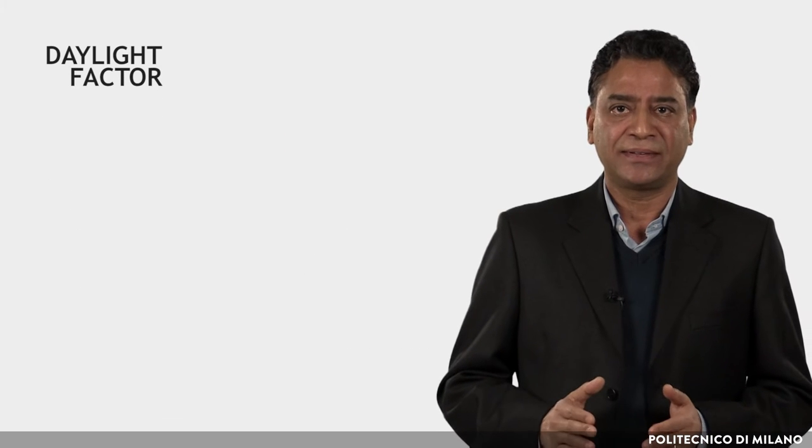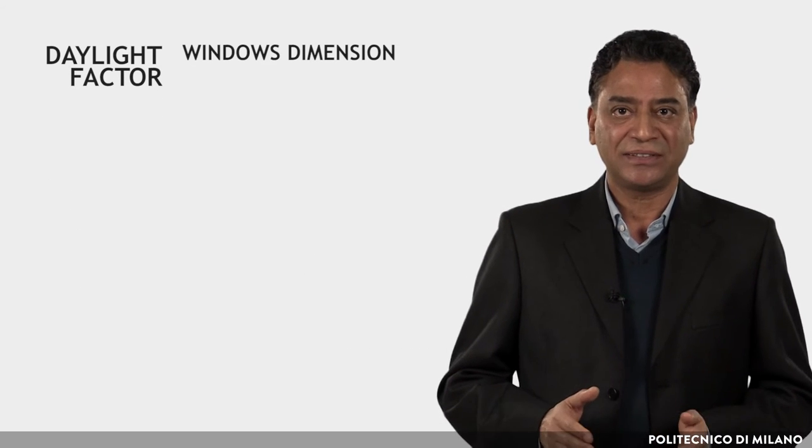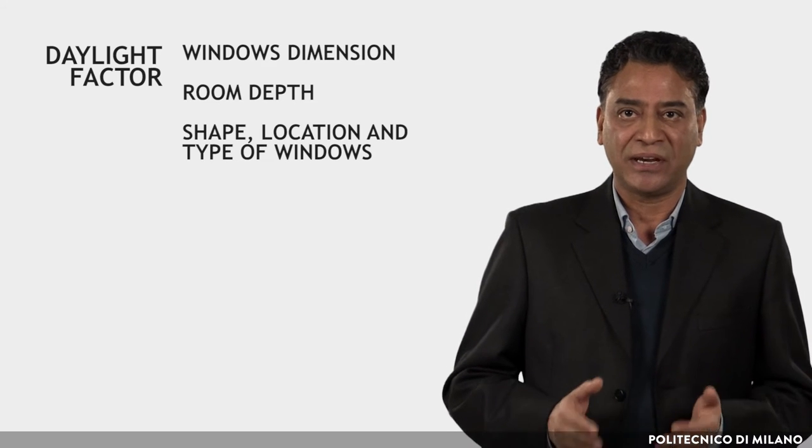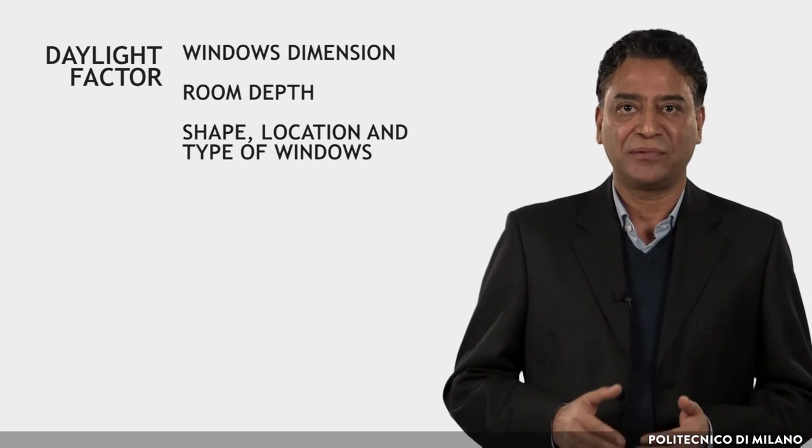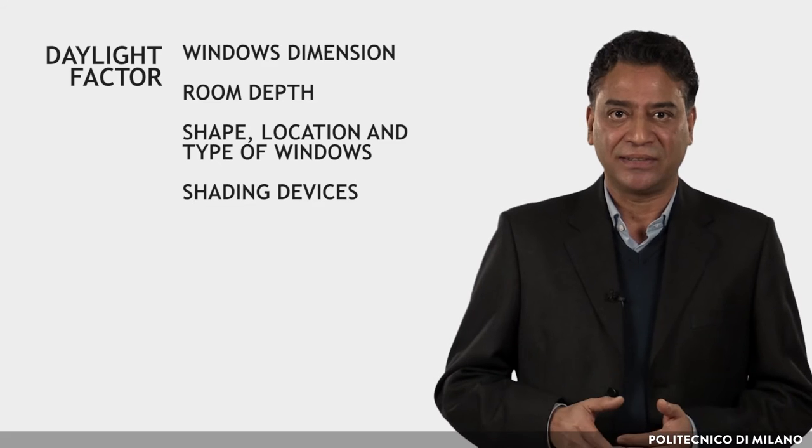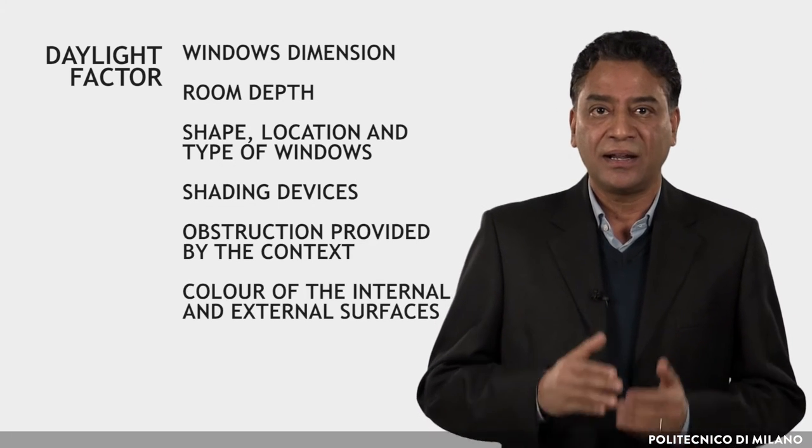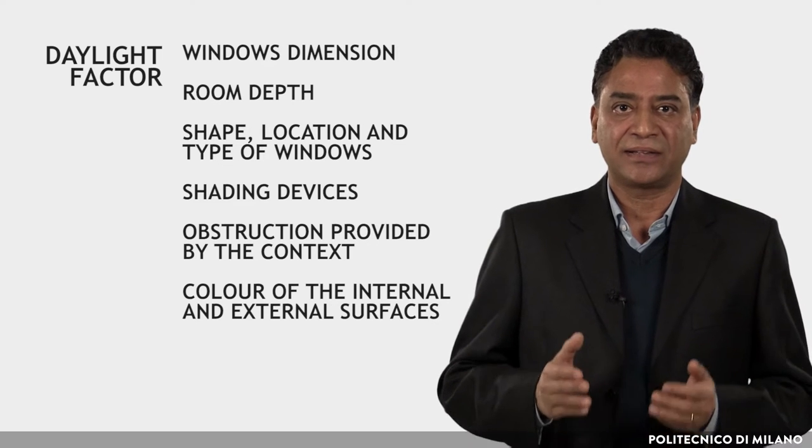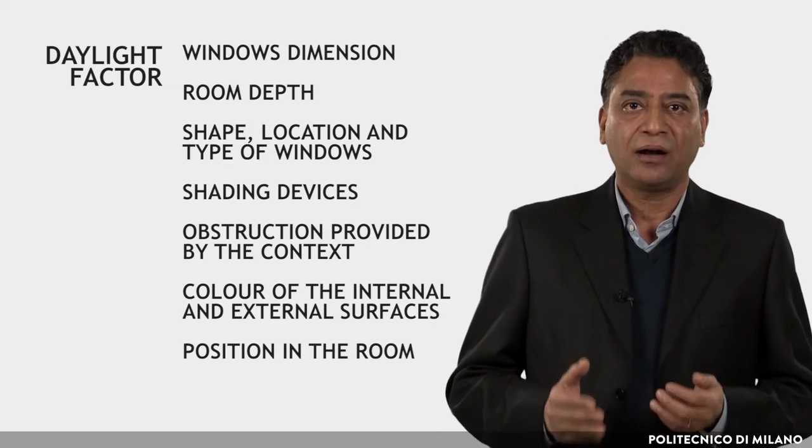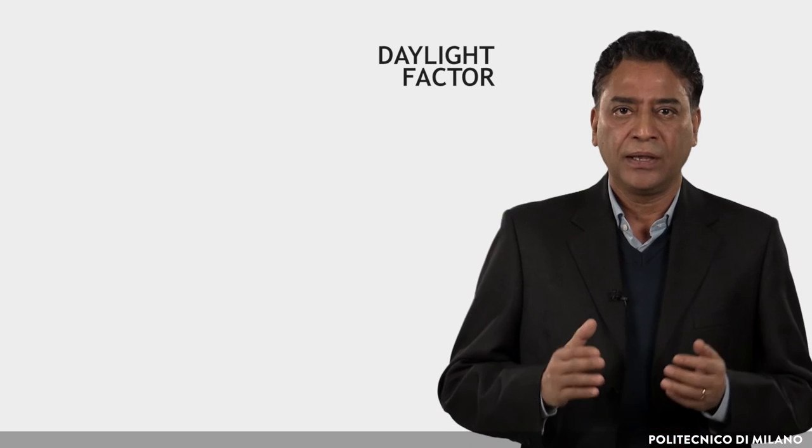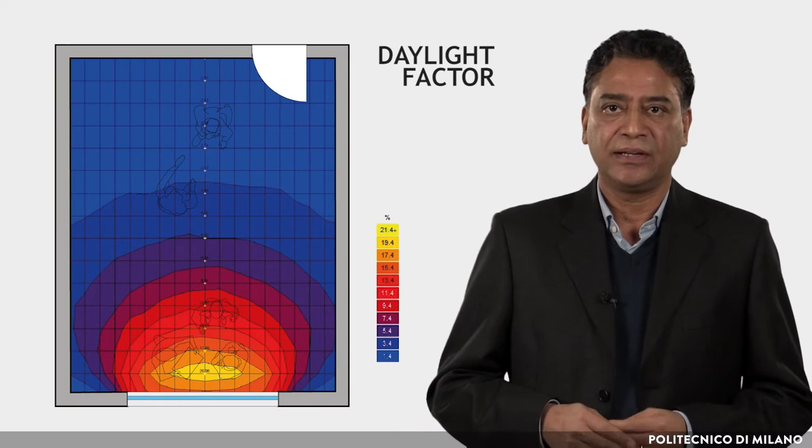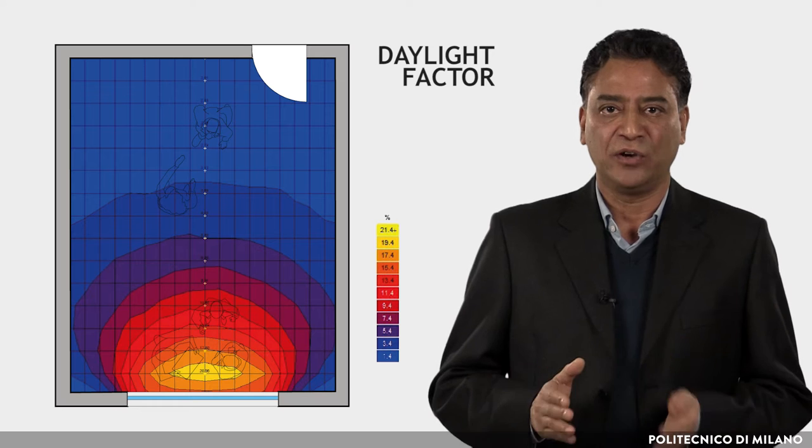The daylight factor depends on the window's dimensions, the room depth, the shape, location and type of windows, shading devices, the obstruction provided by the context, the color of the internal and external surfaces, and on the position in the room. The figure shows an example of the variation of daylight factor in a room equipped with a window.